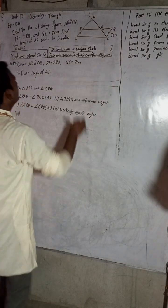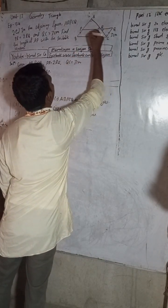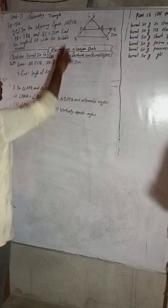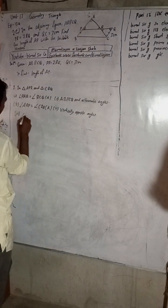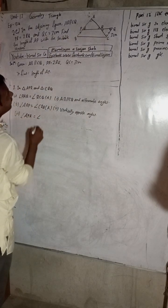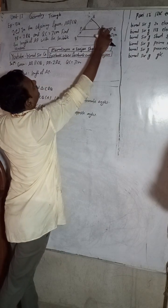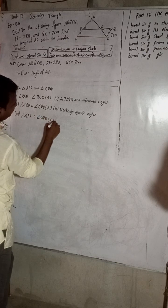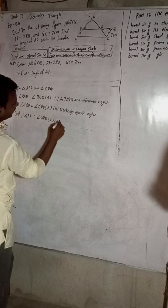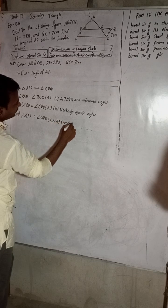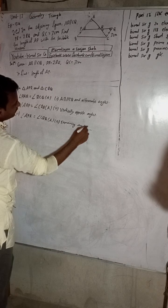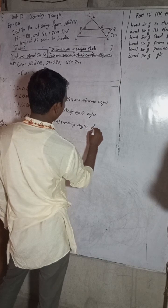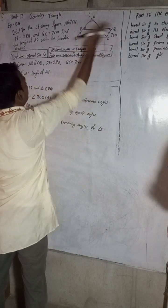We have shown two pairs of angles equal — angle one, two; and angle one, two. Therefore the third angle APR is equal to angle CQR, as the remaining angles of a triangle will also be equal.